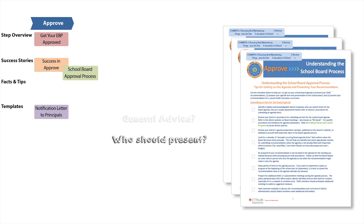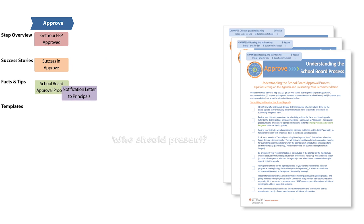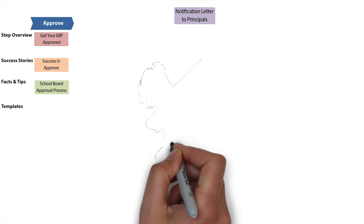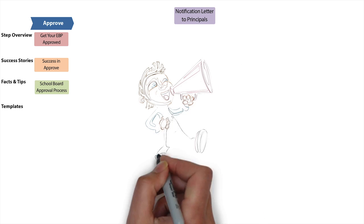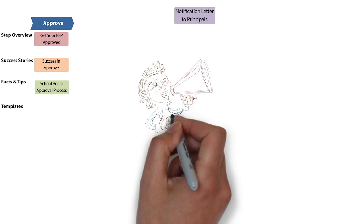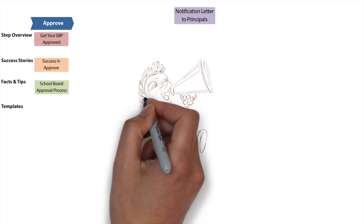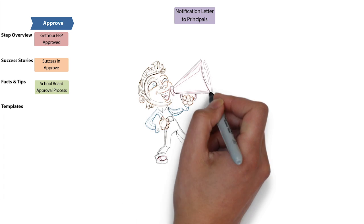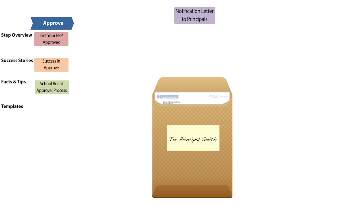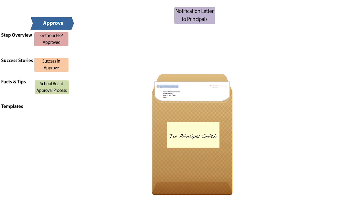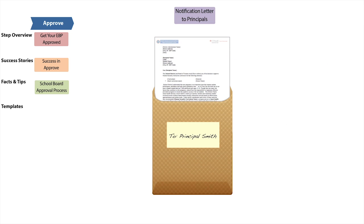It's unlikely that everyone in the district will be present when the school board votes on the program. Therefore, once it's approved, it's important to inform staff, especially school-level staff. The iChamps Notification Letter to Principals can be distributed after approval to ensure they know that the program can be used in their school.